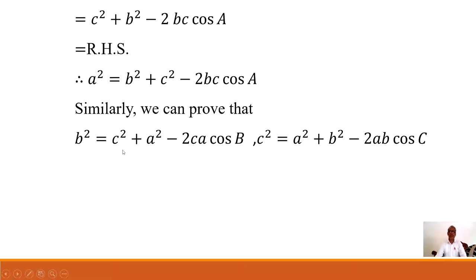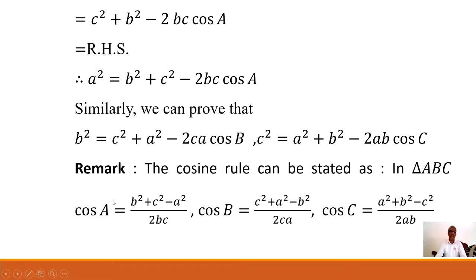Similarly, we can prove that b² and c² follow the same pattern by choosing vertex B as origin. The remark is that the cosine rule in triangle ABC can be rearranged to find the angles: cosA = (b² + c² − a²) / 2bc. Similarly, cosB and cosC can be expressed analogously.